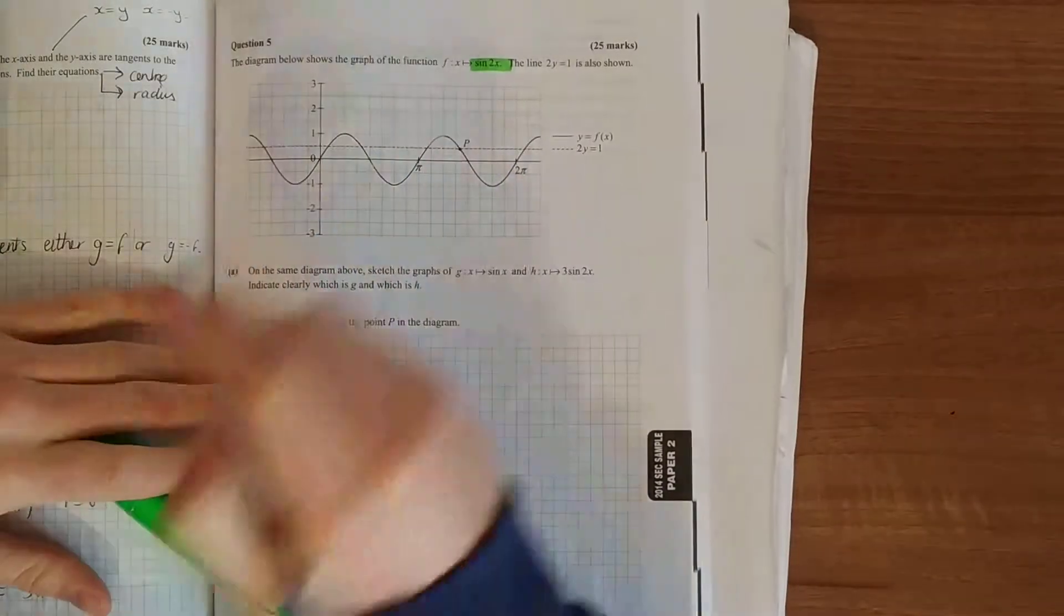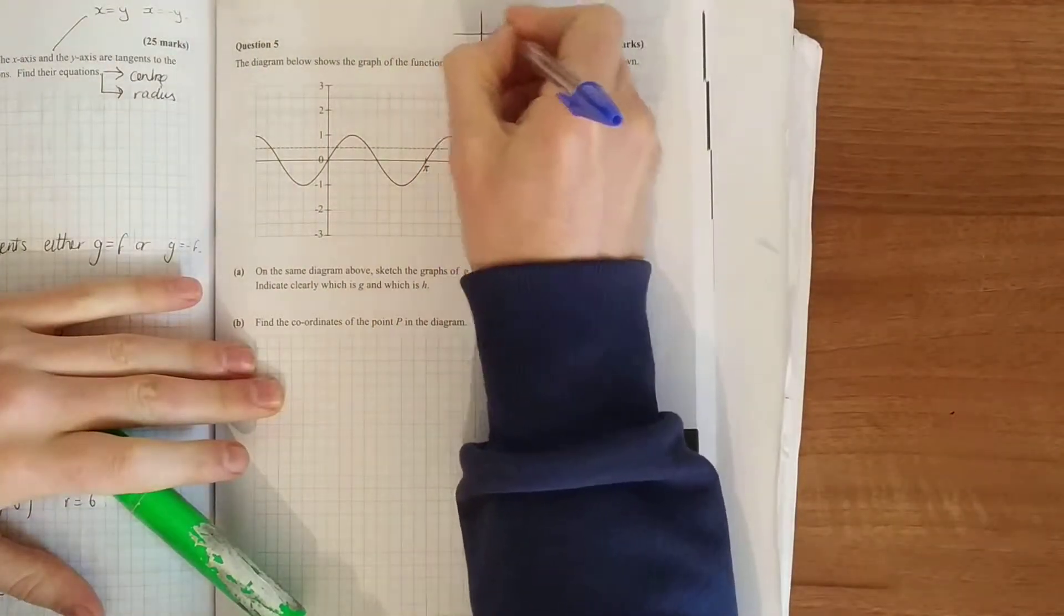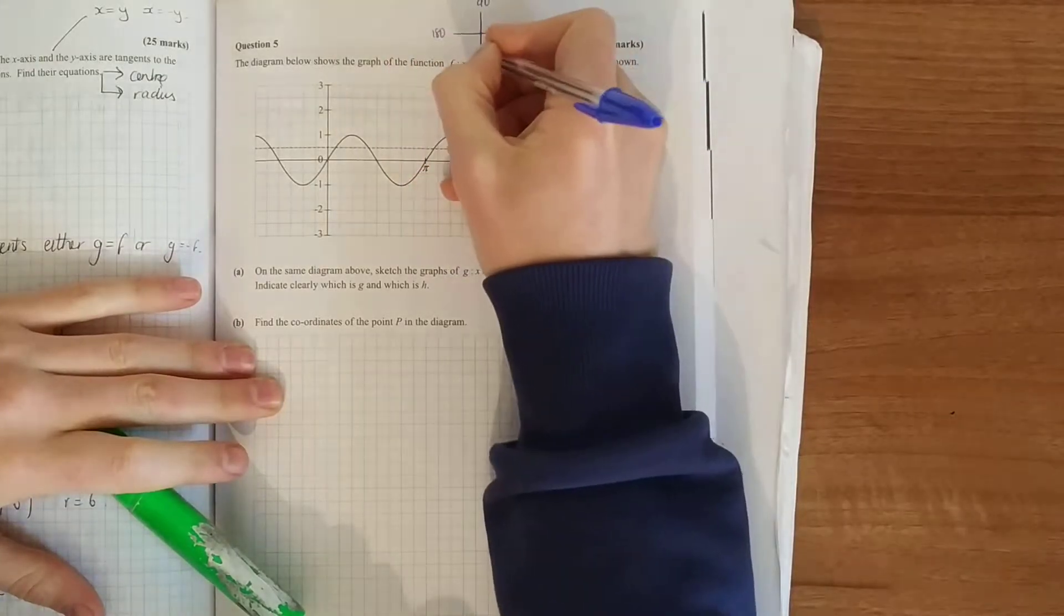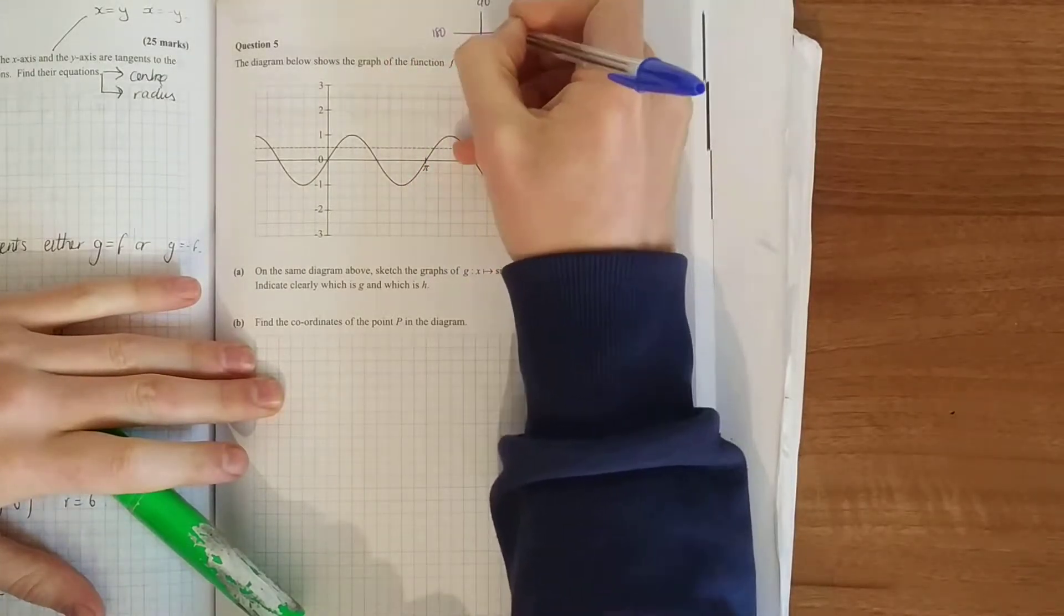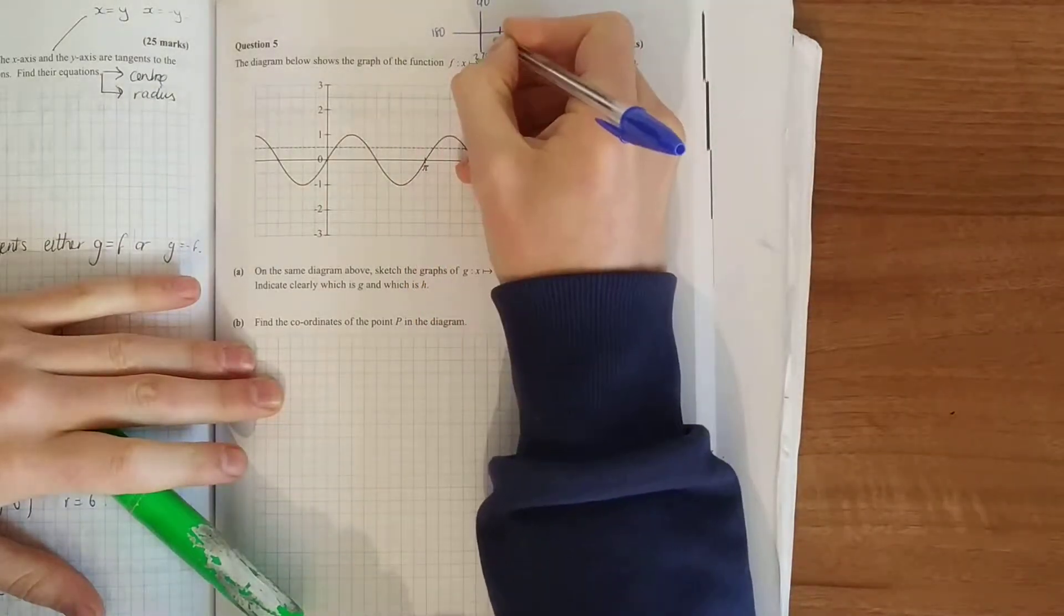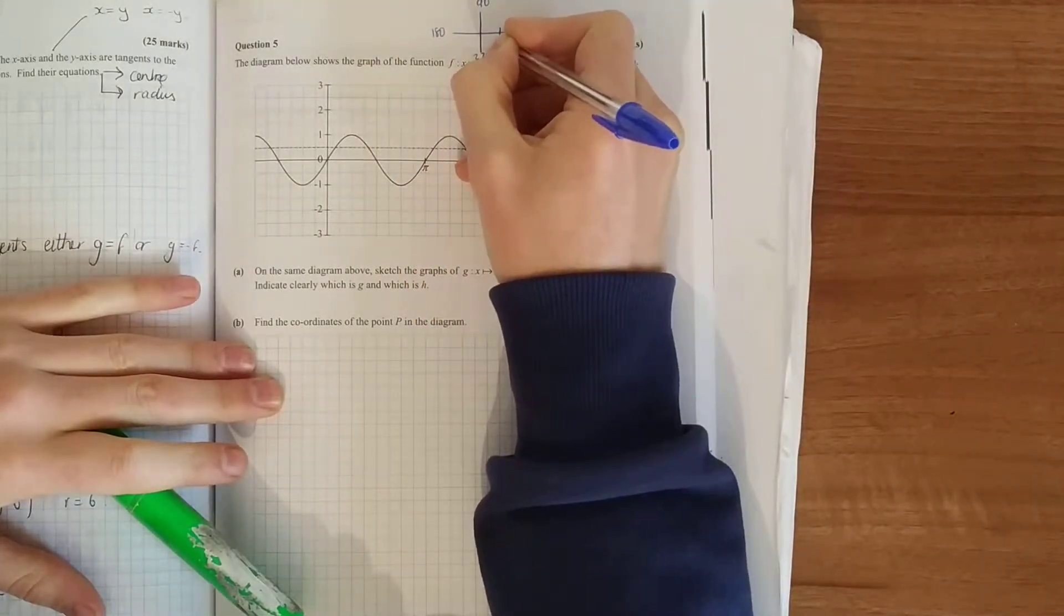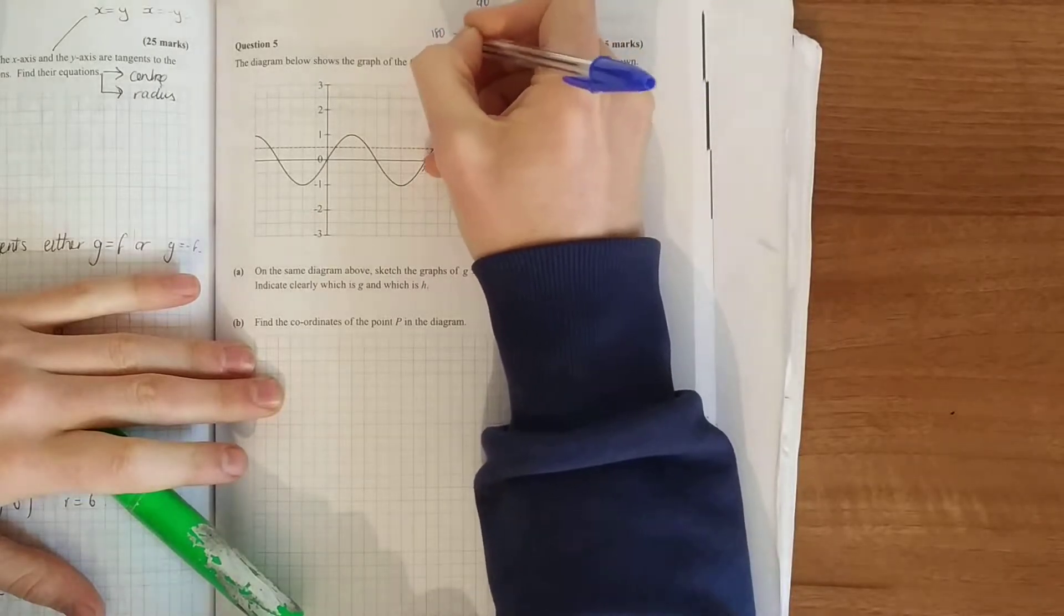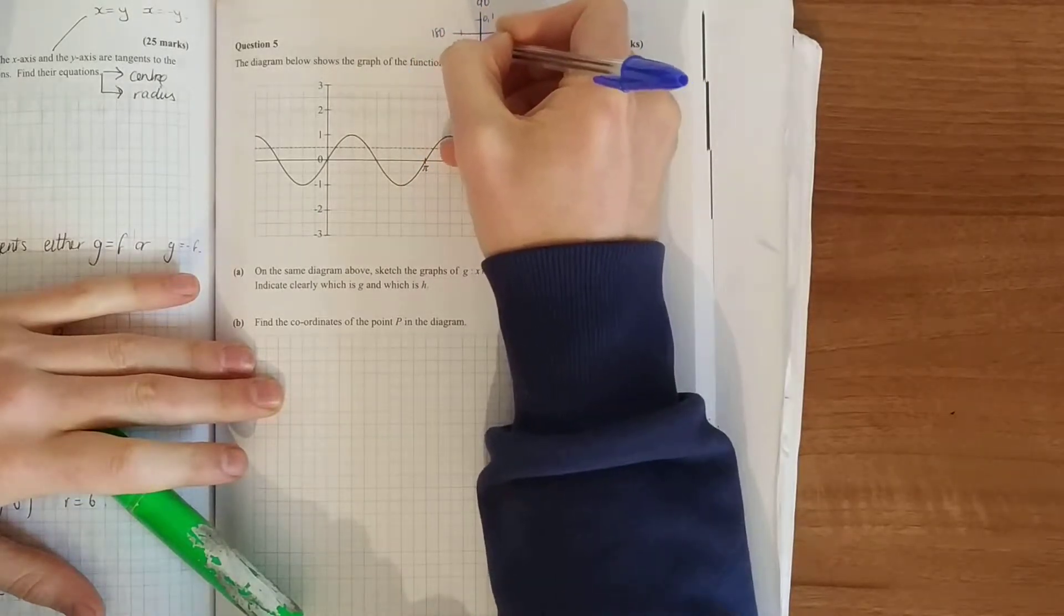Remember this is all to do with your trig circle: 0, 90, 180, 270, 360. In your normal sine function, it goes between 1, 0, 0, 1, minus 1, 0, 0, minus 1.